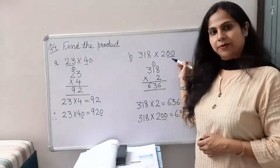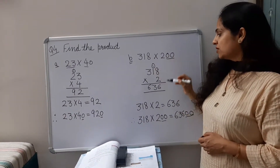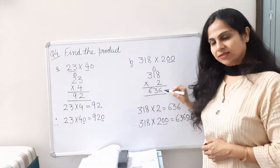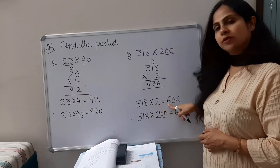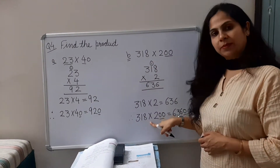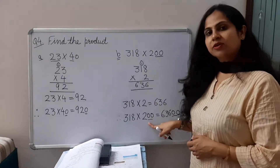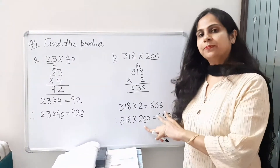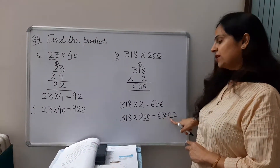Now let's move to Part B. Part B is 318 multiplied by 200. First we multiply non-zero numbers: 318 multiplied by 2 is equal to 636. Now, 318 multiplied by 200 is equal to 63,600. There are two zeros, so we add two zeros on the extreme right side.